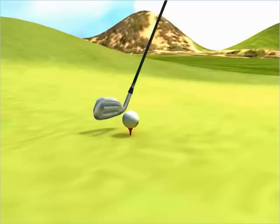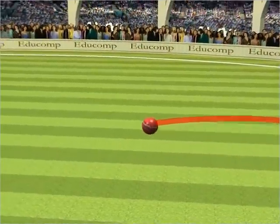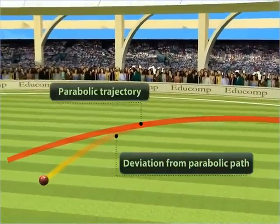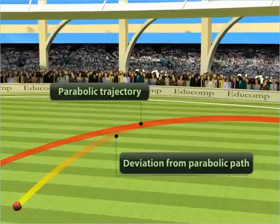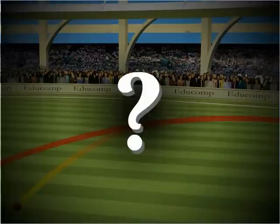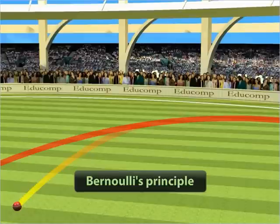You might have noticed that in games like golf or cricket, a spinning ball deviates from its parabolic trajectory as it moves through air. Now the question arises: why does a spinning ball change its track when it spins?